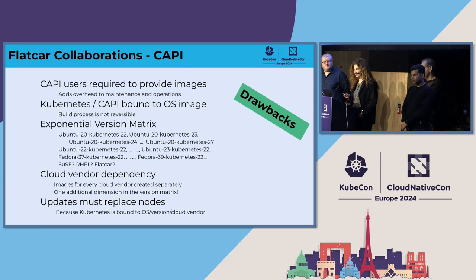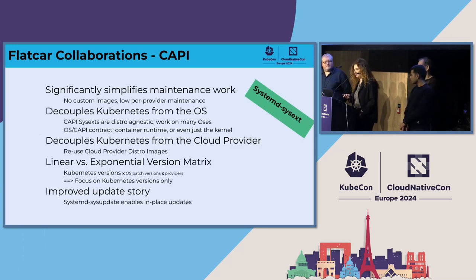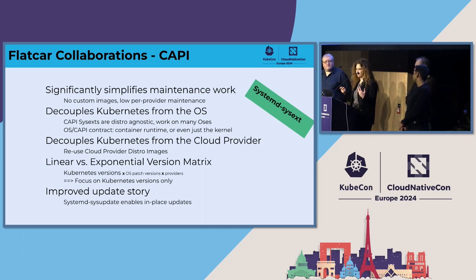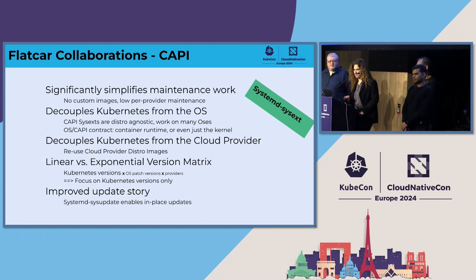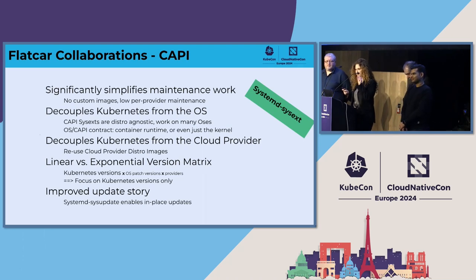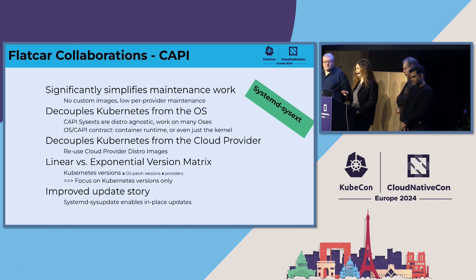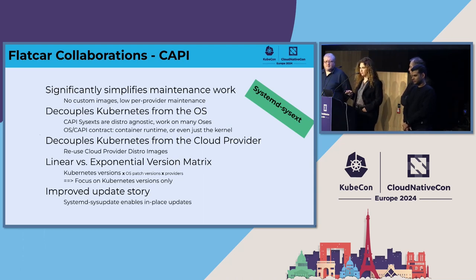Therefore, we started to work on systemd-sysext. What's interesting about that is it really simplifies things. Instead of having a matrix of all these different things working together, you get linear complexity. You take the basic OS from the cloud provider, and on top of that add the bits that are interesting for you — like for the Kubernetes version. You can also create updates that don't require creating a new node, but instead in-place updates using symlinks for /usr or /opt.